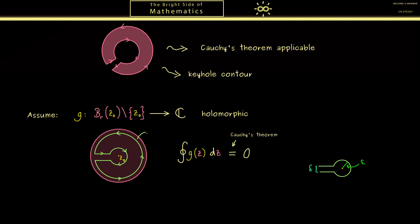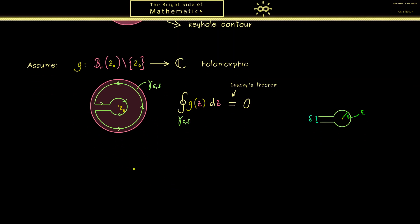Then the name we give the curve is gamma with index epsilon delta. And then our result here is, no matter how small the positive numbers epsilon and delta are, we always get that the contour integral is 0. That's not new, but now we want to use that and split the integral up into 4 parts.